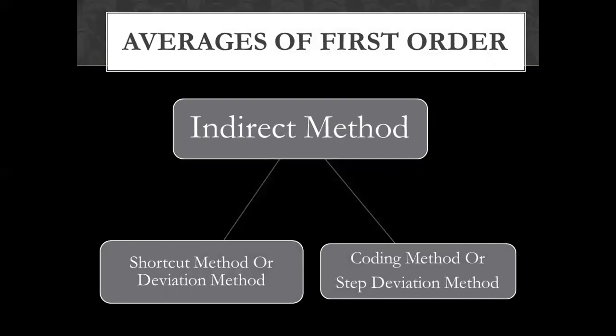The indirect method includes the shortcut and deviation method, and the coding and step deviation method. So the arithmetic mean has two methods: the direct method and the indirect method, giving us a total of three sub-methods overall.